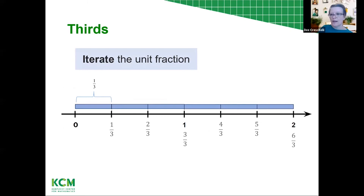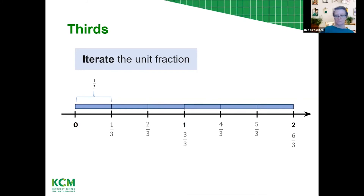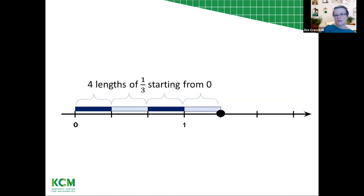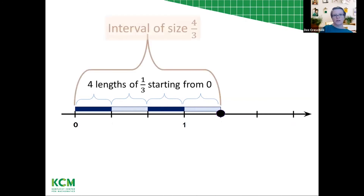You can go back and rename three-thirds and six-thirds as one and two. There's a connection between bar models and number lines — we go from linear to number line in tandem, which makes it make a whole lot more sense to kids. Four lengths of one-third from zero gives an interval of four-thirds. This is important for kids understanding that fractions can live beyond one — four of those lengths of one-third gives an interval of four-thirds.